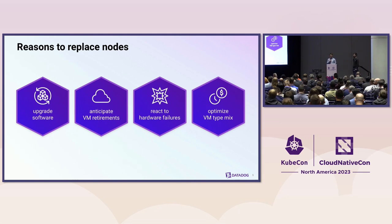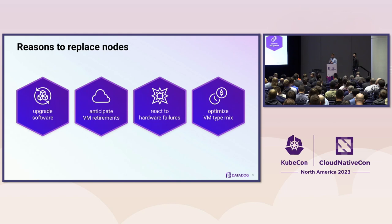Our plan is that applications are highly available and generally tolerate involuntary disruptions — the sudden loss of a node and its pods. But the reasons listed here occur too frequently to just kill the nodes. Luckily, there's a better way.